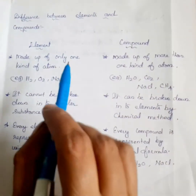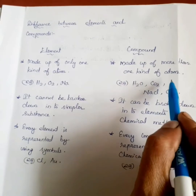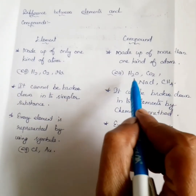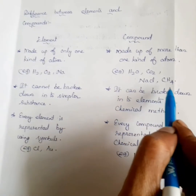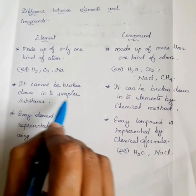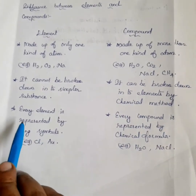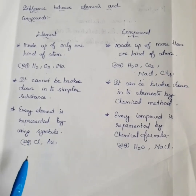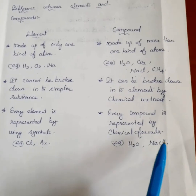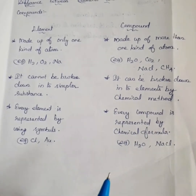What is the difference between elements and compounds? An element is made up of only one kind of atom — examples: hydrogen, oxygen, sodium. A compound is made up of more than one kind of atom — examples: water, carbon dioxide, sodium chloride, and methane. An element cannot be broken down into simpler substances, whereas a compound can be broken down into elements by a chemical method. Every element is represented by a symbol, and every compound is represented by a chemical formula — for example, H2O for water and NaCl for sodium chloride. Thank you, today's class is over.